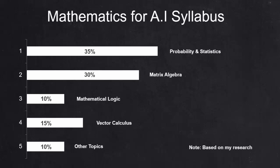These are all the chapters we are going to learn in this course. I gave this percentage share for each subject based on my research only. Good thing here is if we complete the probability and statistics and matrix algebra, almost 65% of syllabus is completed.